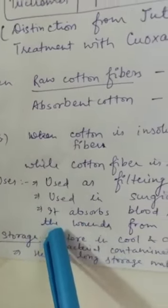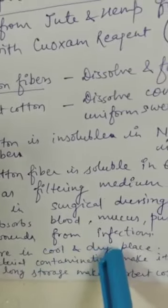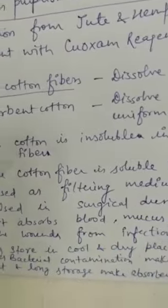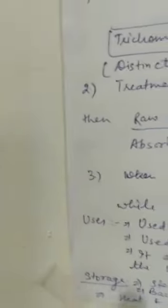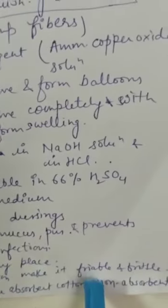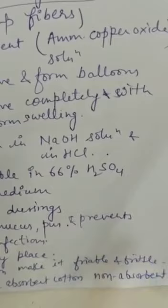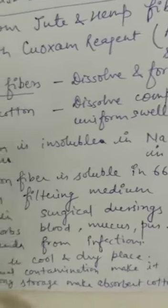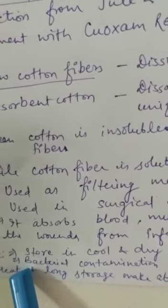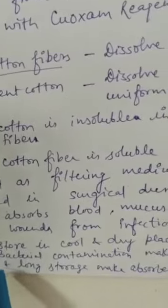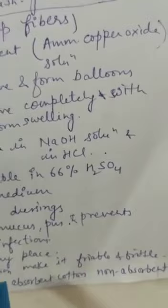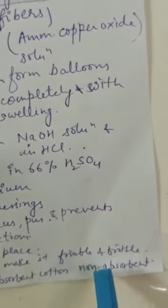Now storage: store in a cool and dry place. If bacterial contamination occurs, then the cotton becomes friable or brittle. If heat is applied or if we store it in a warm atmosphere at high temperature for many days, that converts the normal absorbent cotton to non-absorbent.